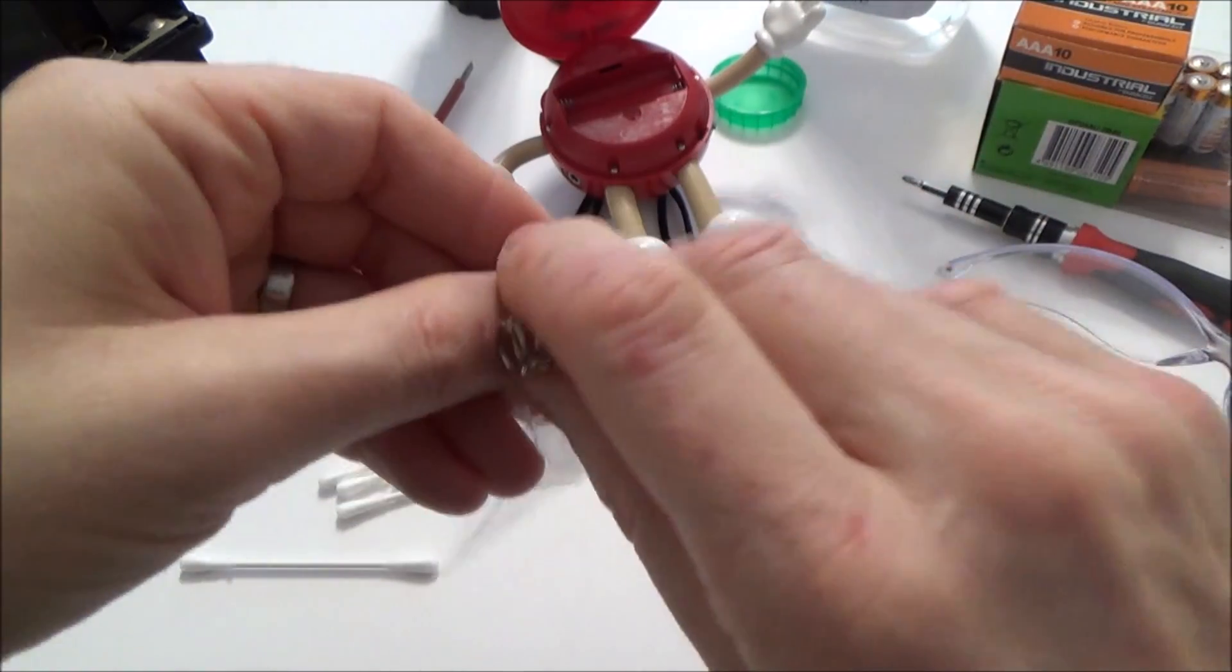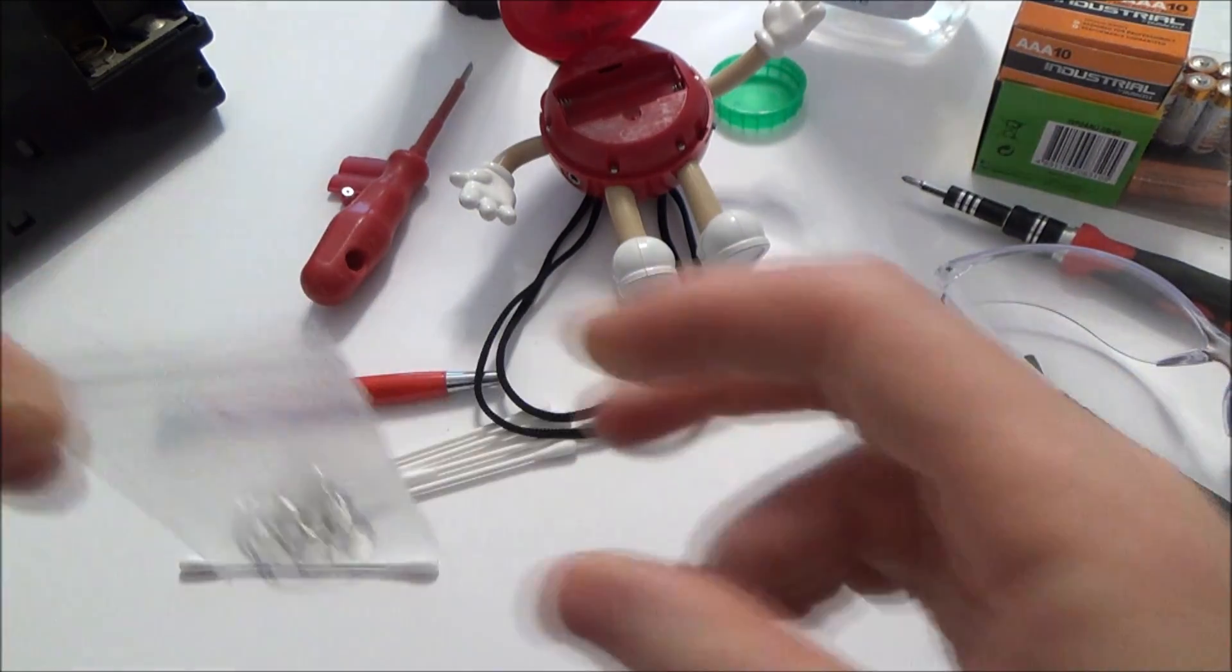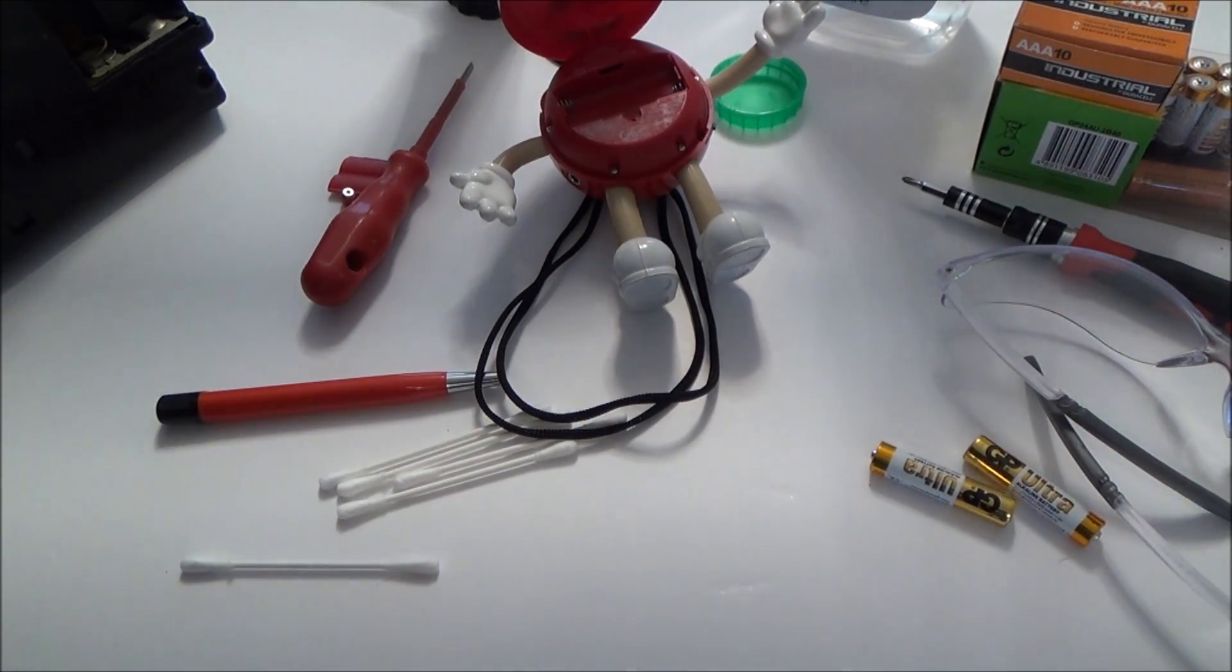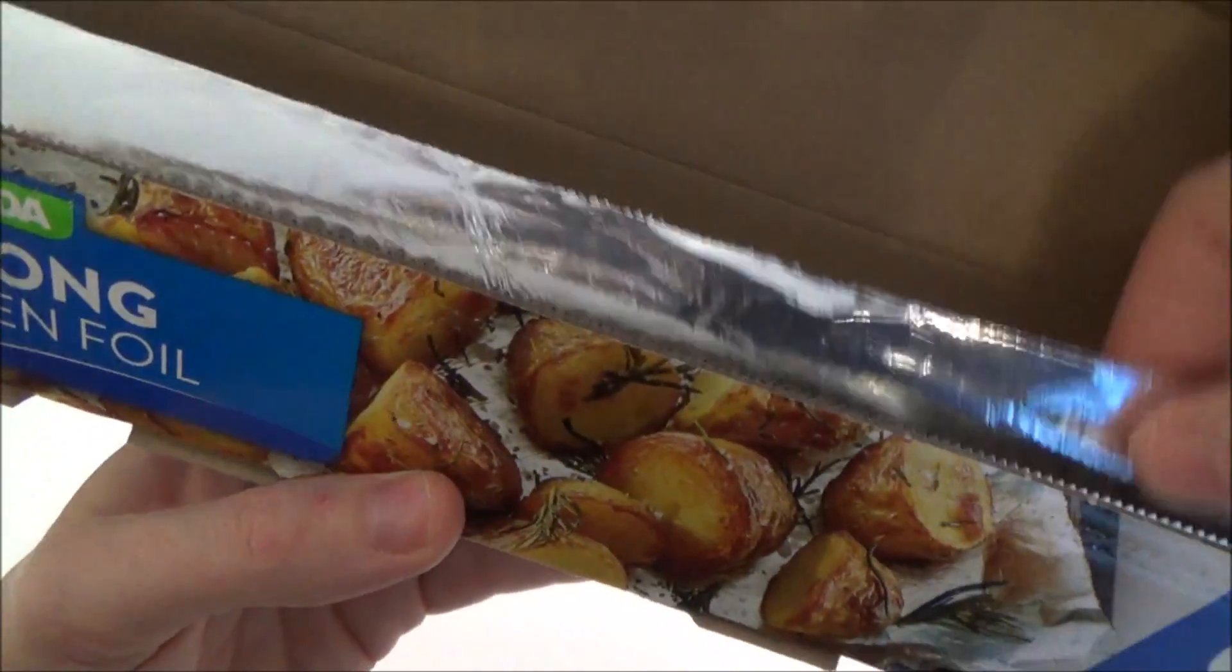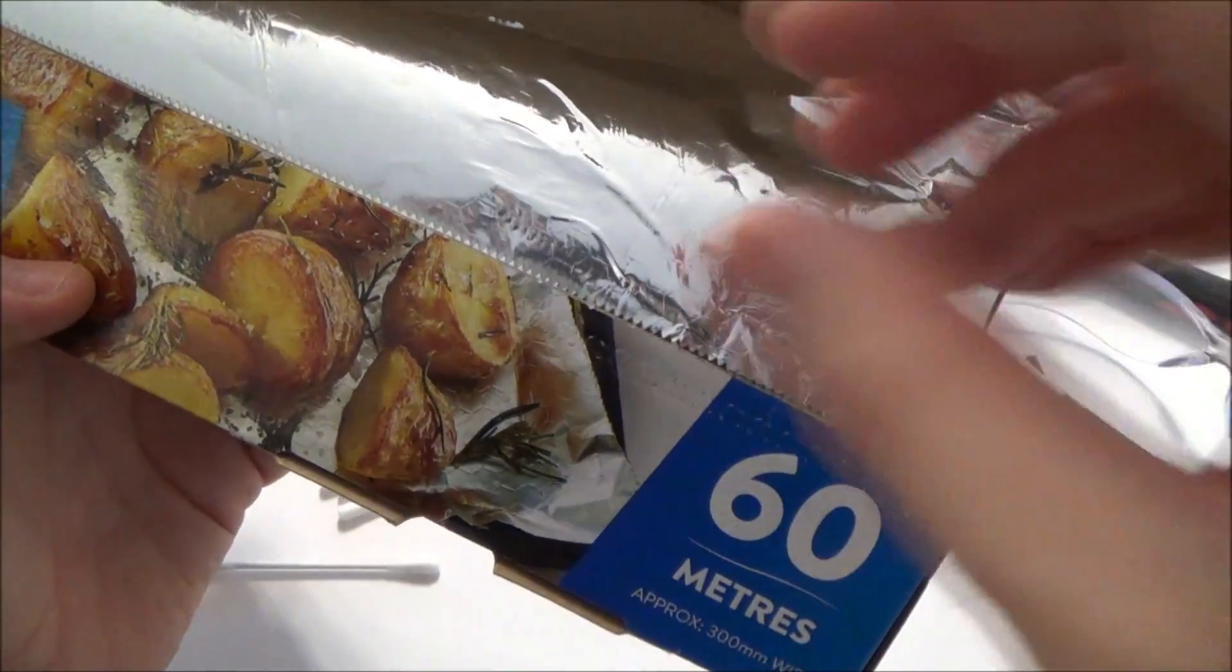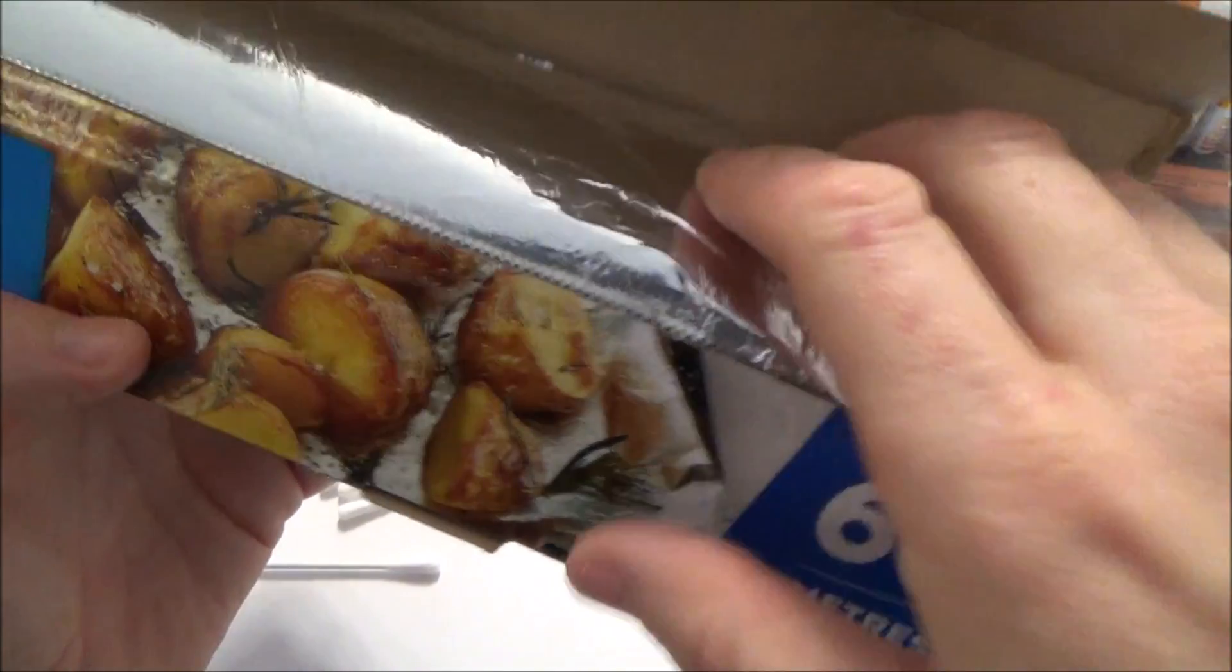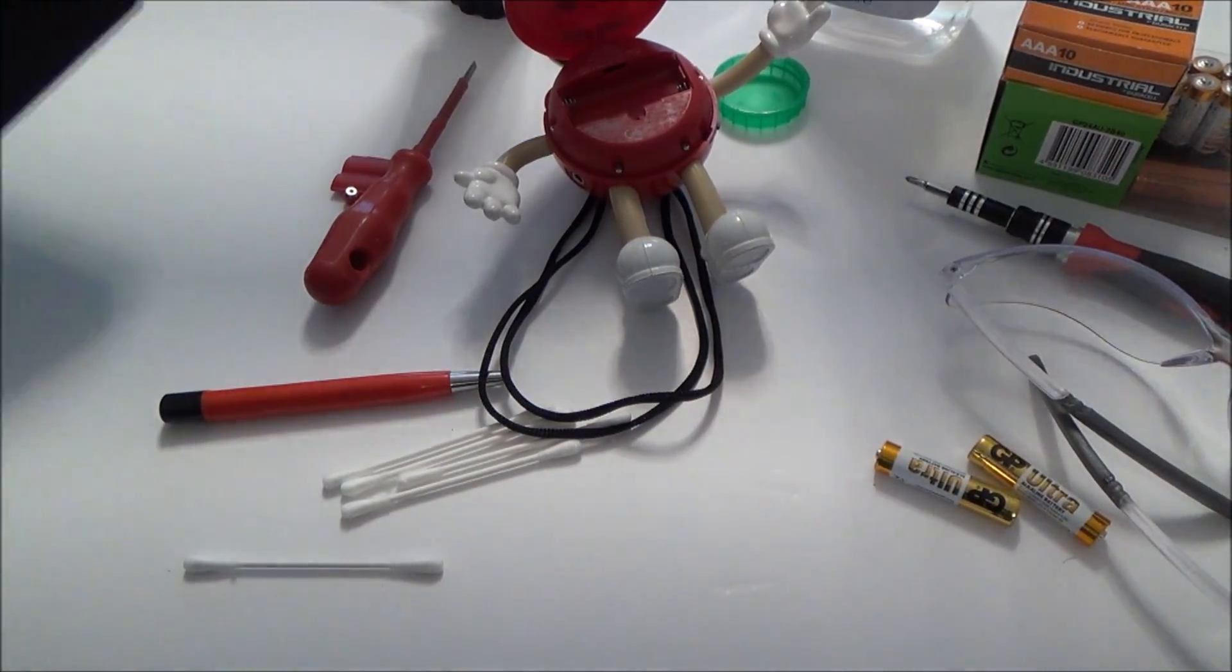If you wanted to do a bit of a bodge job, then instead of using a spring you could put the batteries in there and you could actually use tin foil because kitchen foil is going to conduct the electricity. I'm not saying it's a good job but it will work.